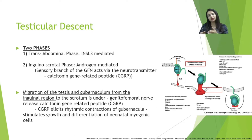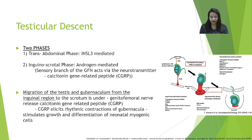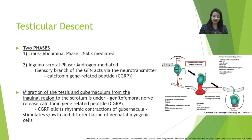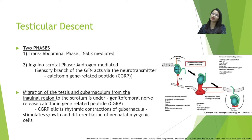In the second — inguino-scrotal — phase, which is predominantly androgen-mediated, the processus vaginalis travels via the inguinal canal to the scrotum, becoming surrounded by cremasteric muscles, with involvement of the genitofemoral nerve. The fetal testis releases testosterone, which virilizes the sensory dorsal root ganglion of the genitofemoral nerve, further releasing CGRP. This CGRP causes rhythmic vigorous contraction of the gubernaculum, which brings the testis down into the scrotum from the inguinal canal.